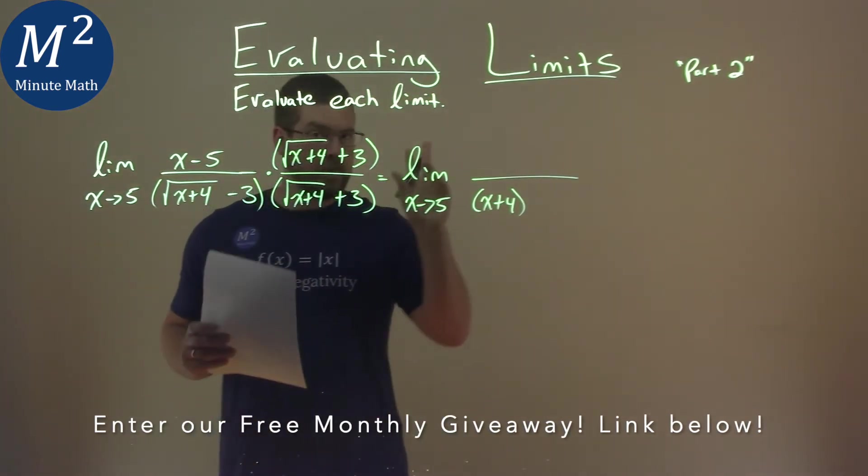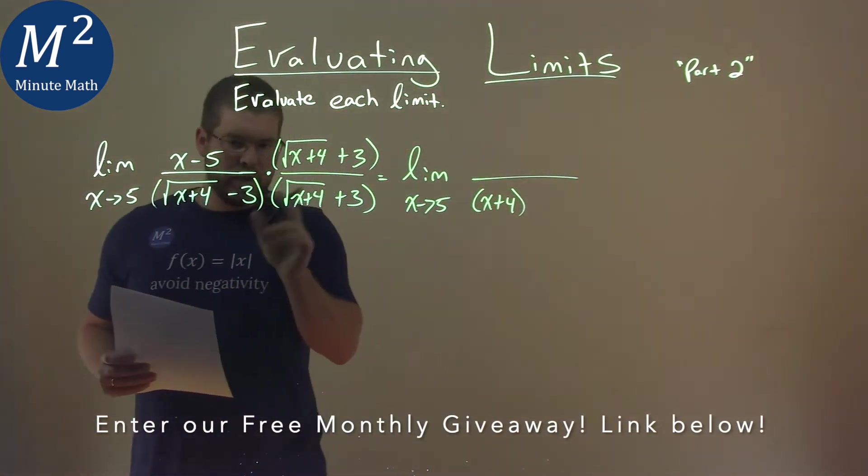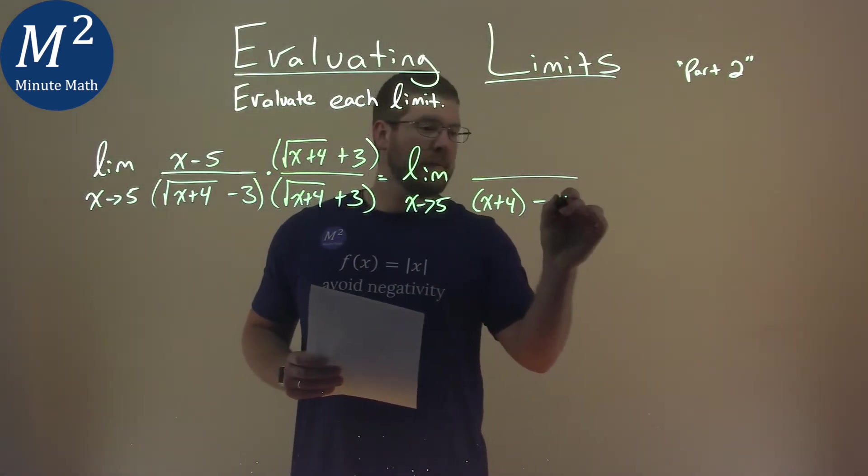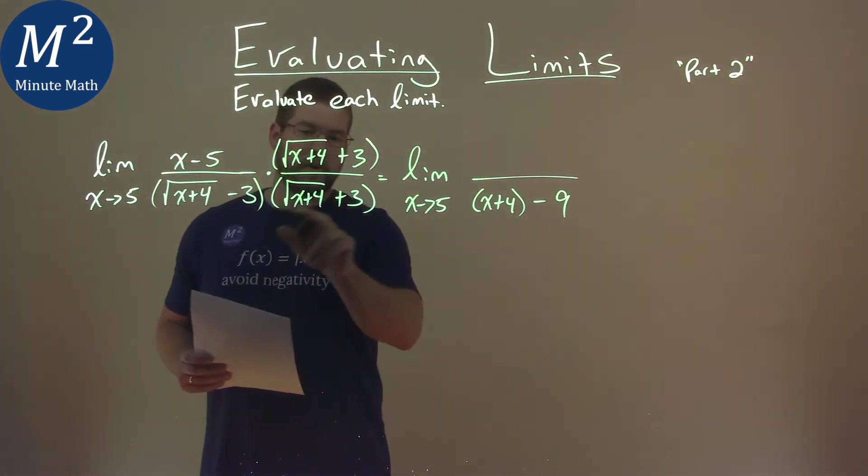The inside parts, when we FOIL, eliminate with the minus 3 plus 3. Negative 3 times 3 is negative 9 when you multiply them.